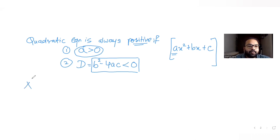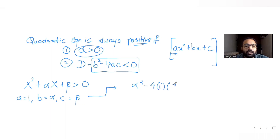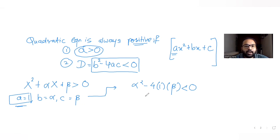For the given quadratic equation x² + αx + β > 0, we have a = 1, b = α, and c = β. The discriminant condition gives α² − 4·1·β < 0, so α² < 4β. Since a = 1 > 0 is already satisfied, the condition we need is α² / 4 < β.